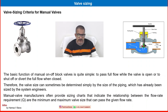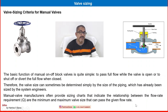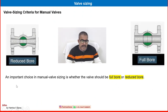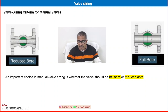Manual valve manufacturers often provide sizing charts indicating the relationship between flow rate requirements, and the minimum and maximum valve size that can pass a given flow rate. An important choice in manual valve sizing is whether the valve should be full bore or reduced bore. In full bore, the valve diameter is equivalent to the pipe diameter, while in reduced bore, the valve sizing is slightly less than the pipe diameter.